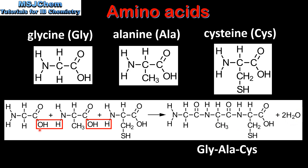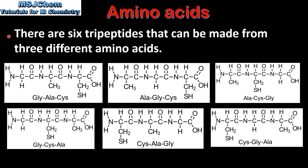As we saw previously, the water molecule is formed from the OH group on one amino acid and the hydrogen atom on another. In a tripeptide, which is made from three amino acids, we have two peptide bonds formed and two molecules of water. There are six tripeptides that can be made from three different amino acids. In each tripeptide the sequence of the amino acids, which is the primary structure, is different.